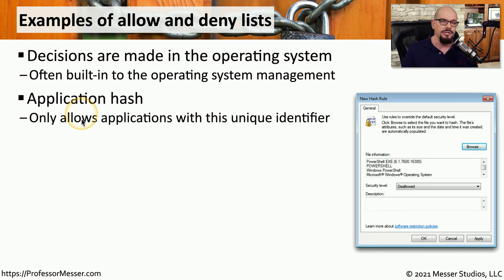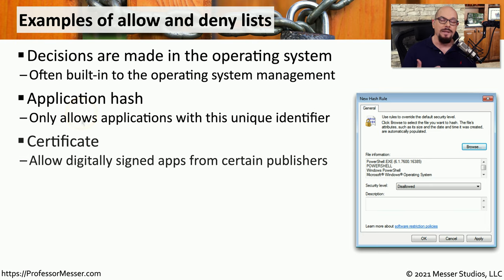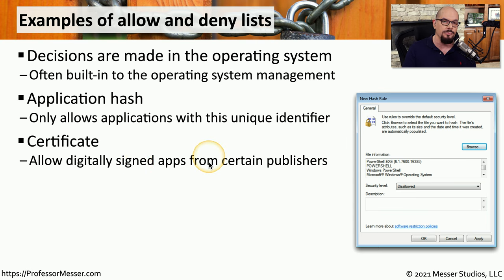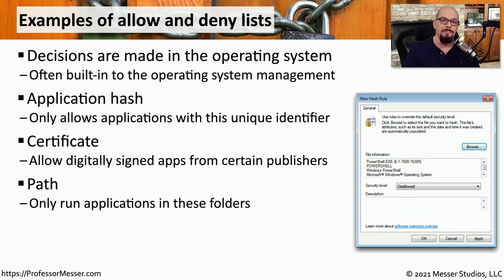For example, there might be an application hash. You would take a hash of the application executable, and the only version that would run is the one matching that hash. If the application is upgraded or changed in any way, the hash will not match and the application won't run. An application that has been digitally signed can also be used as criteria. For example, you can tell from a digital signature if the application is from Microsoft, Adobe, or Cisco, and allow those applications to run.